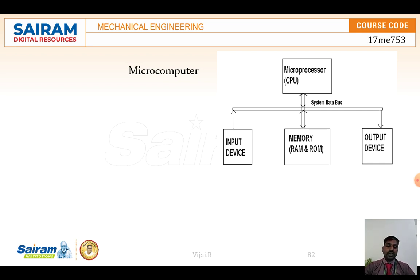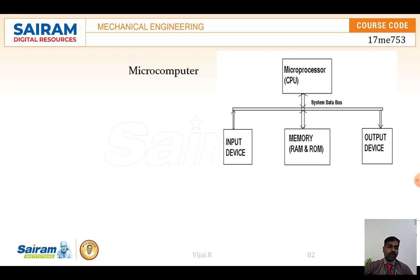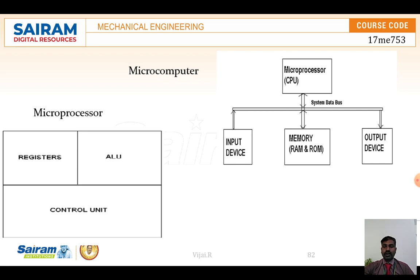Data from input devices is sent to memory first and stored there. When processing is needed, the data is taken back to the microprocessor. After processing, it is stored again and the results are sent to output devices — such as a monitor, keyboard, printer, or other devices.